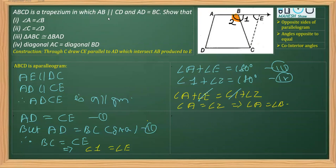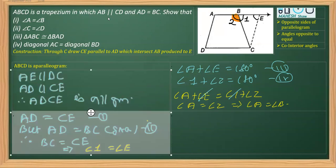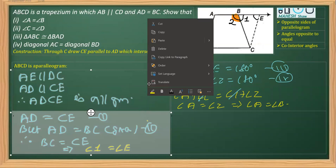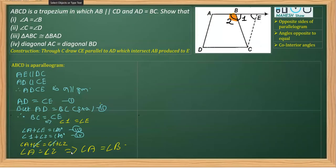Now continuing with the next part, we have to prove angle C is equal to angle D. We can see angle C and angle D in the figure, and we have already proved angles A and B as equal in the previous part.